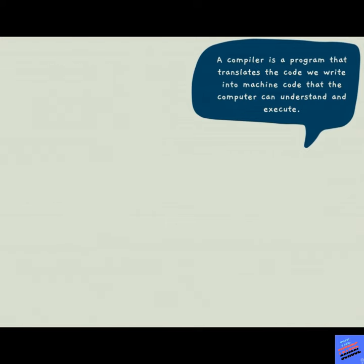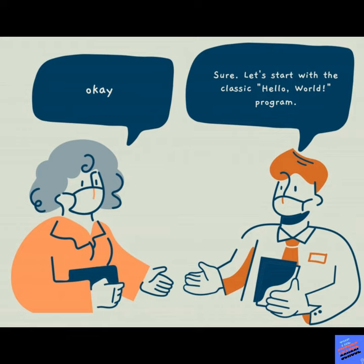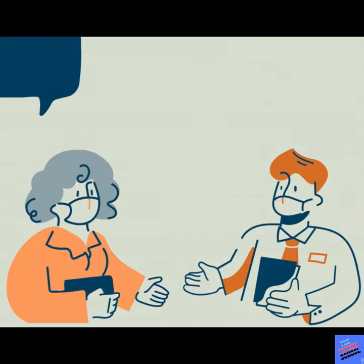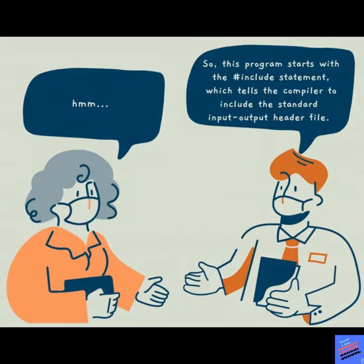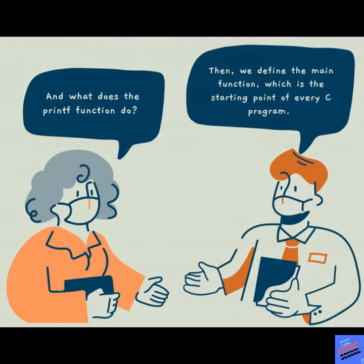Sure, let's start with the classic Hello World program. This program starts with the #include statement, which tells the compiler to include the standard input/output header file. Then we define the main function, which is the starting point of every C program.